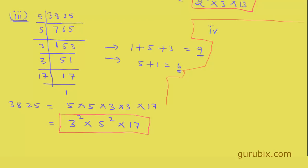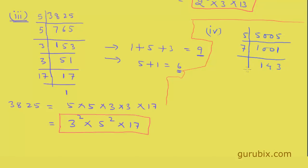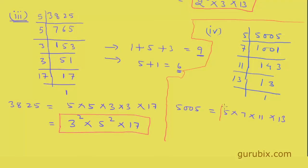Now let me solve the fourth one — 5,005. Dividing by 5, we get 1,001. We see that 1,001 will be divided by 7, and then that result will be divided by 11, giving us 13, and dividing 13 by 13 we get 1. So the answer is 5 × 7 × 11 × 13.